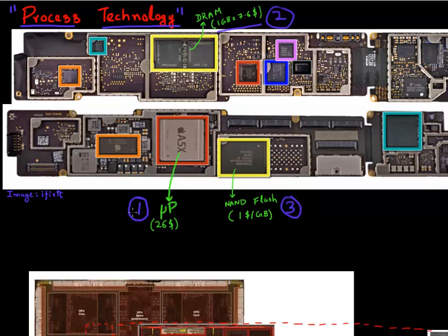These are the typical three components you'll see in any mobile device. You'll always find a microprocessor, you'll always find a DRAM chip — sometimes standalone, sometimes stacked on top of your microprocessor to save space on your board — and you'll almost always find a NAND flash memory to store your apps and data.